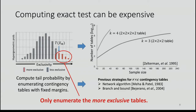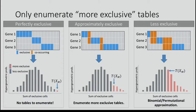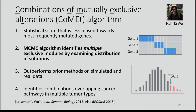COMET has an algorithm to enumerate only the tables in the tail. In our application, where we're looking for exclusive sets of mutations, in the case where mutations are perfectly exclusive, we have no tables to enumerate and can compute the exact p-value in constant time. When mutations are approximately exclusive, there are not many more tables in the tail. In the cases we're least interested in — less exclusive sets — we can use a binomial or permutational approximation, since we don't care as much about p-value precision in that case.